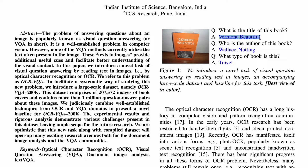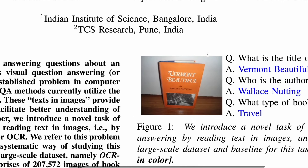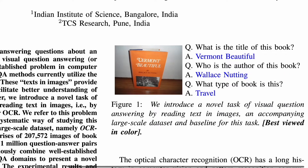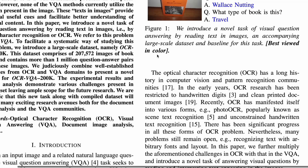This becomes an extractive form of question answering, since the answer is already present in the image. But it also works for abstractive question answering — for example, asking 'What type of book is this?' yields the answer 'Travel.' The word travel isn't directly written, but the image of a road provides the cue. So this is an amalgamation of textual content and visual features present in the book cover.